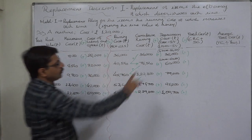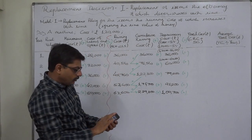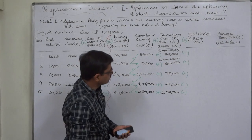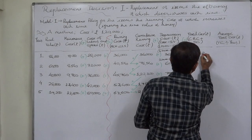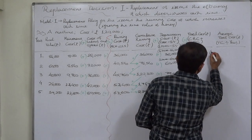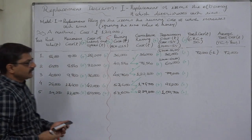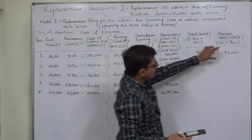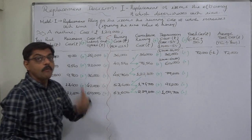We divide the total cost by the respective number of years to get the average cost. For year one: depreciation thirty-six thousand plus running cost thirty-six thousand gives total cost of seventy-two thousand. Divided by one year, the average cost is seventy-two thousand. The interpretation is: if we use this machine for one year, the total cost incurred will be seventy-two thousand.